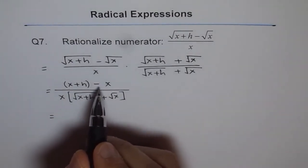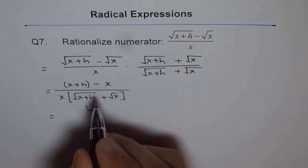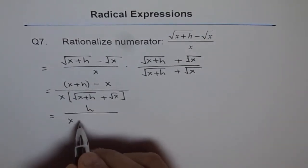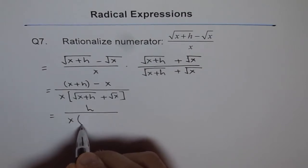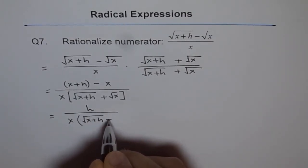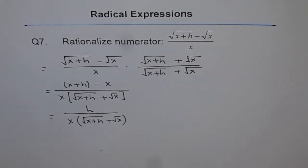Now, x plus h minus x is h. So we get h in the numerator. We get h over x times, within brackets, square root of x plus h plus square root of x. So that is what we get in the denominator.